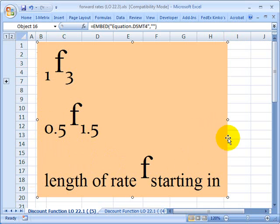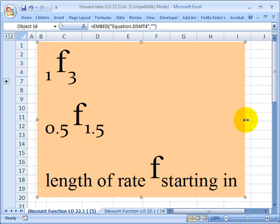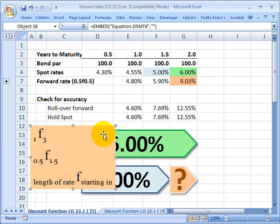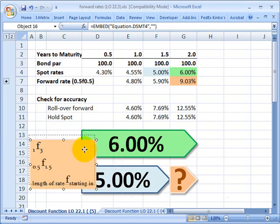So in either case, in all cases we have the length of the rate that's a forward rate starting in this number of periods forward. And I'll shrink that down and put it here so I can show you the numerical example.